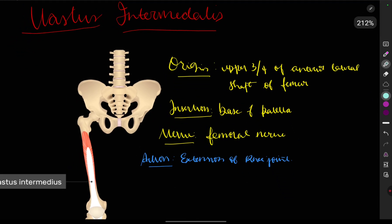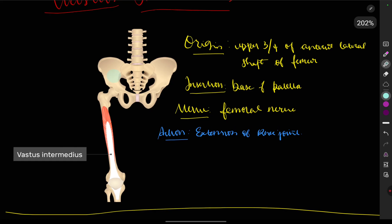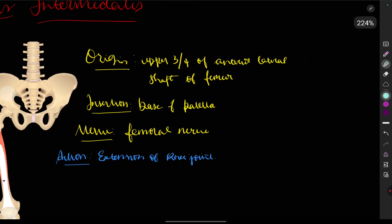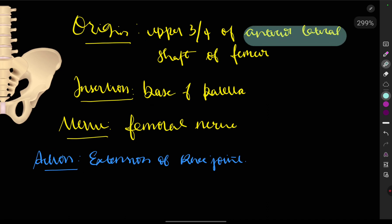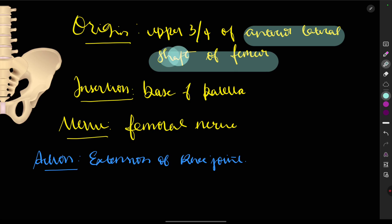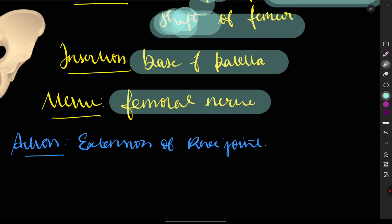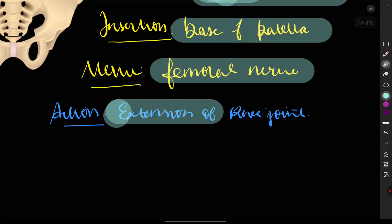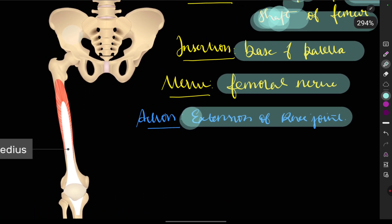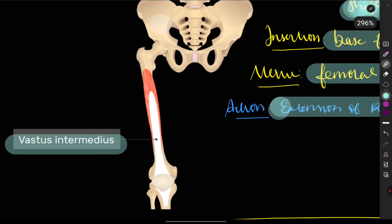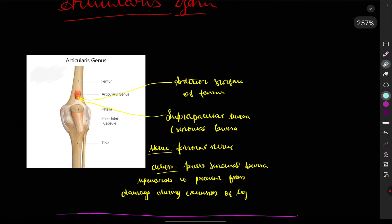The vastus intermedialis muscle also originates from the femur, not from the hip bone. Its origin is the upper three-fourths of the anterior and lateral shaft of the femur — it originates from the shaft, not the upper end. Insertion is on the base of the patella. Nerve supply is the femoral nerve. Its action is extension of the knee joint. The vastus intermedialis lies beneath the rectus femoris muscle.